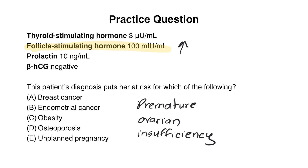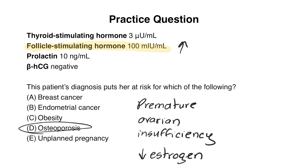Now we have our diagnosis, but this is a two-part question: what does this diagnosis put her at risk of? This patient has premature ovarian insufficiency and will experience low estrogen levels. Normally this occurs when women go through menopause, but she's experiencing this prematurely. Since estrogen is key for bone strength, this patient is at risk of osteoporosis — that was the correct answer.